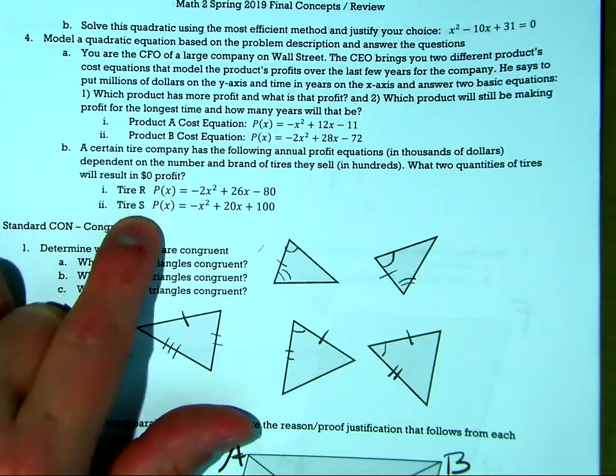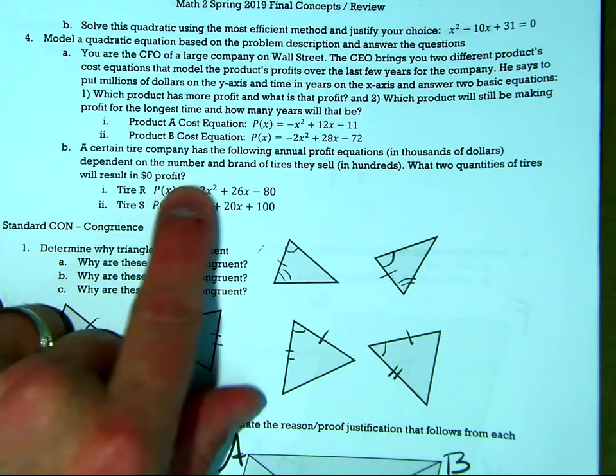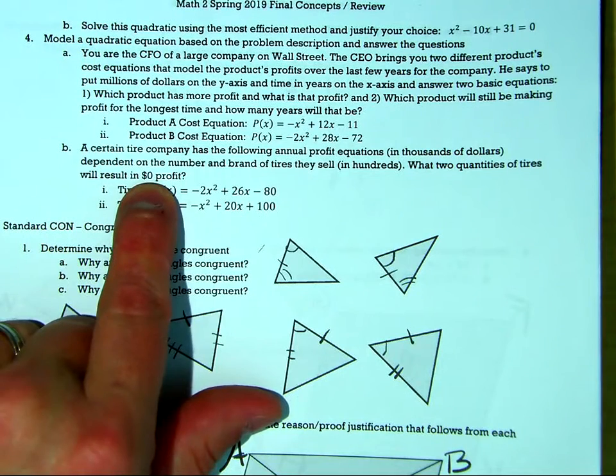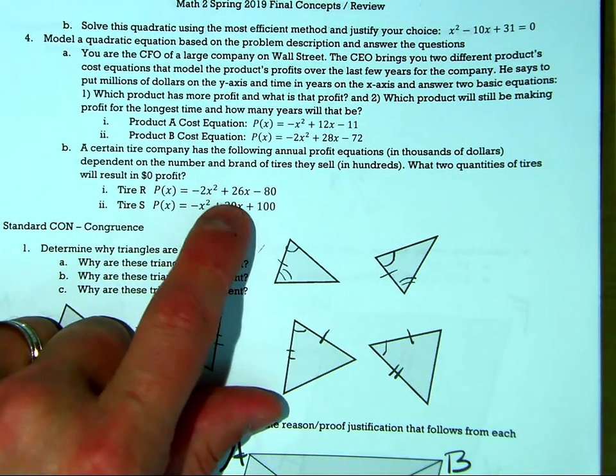Here you have two different tires for a tire company. They're just asking you what two quantities result in zero profit. So we're just trying to solve these two equations.